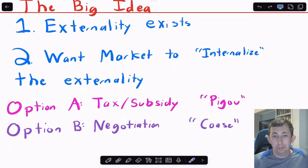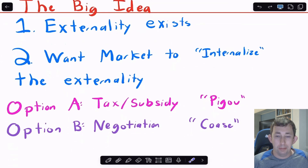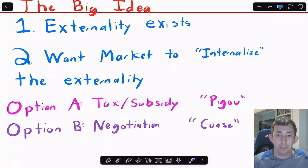The big idea behind Pigouian Taxes and the Coase Theorem is that Pigou and Coase had two different ideas for how to deal with externalities. Given that we have an externality, we want this market to internalize or take the externality into account. Pigou said we could just introduce a tax or subsidy based on the size of the externality. Coase basically said we should let the two parties negotiate and come to a negotiated solution — we just make sure we have well-assigned property rights and low transaction costs.